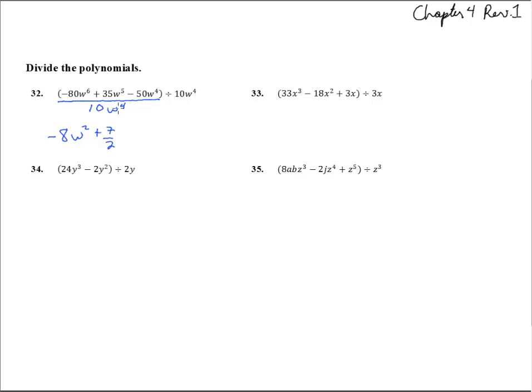So we get w to the 1st. Then 50 over 10 is 5, and w to the 4th over w to the 4th is just 1.